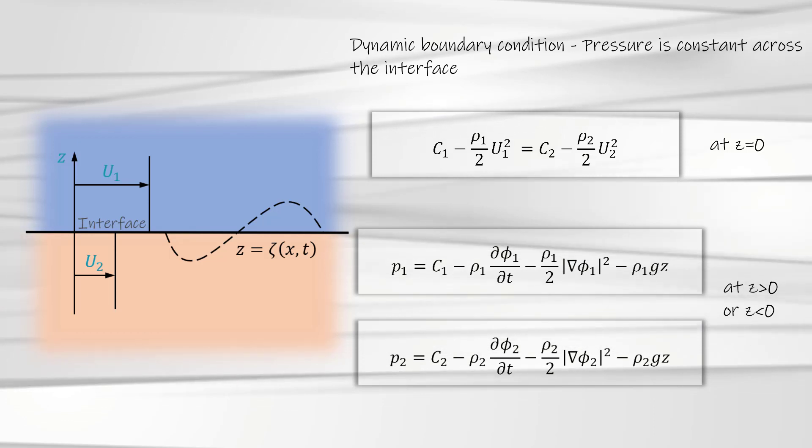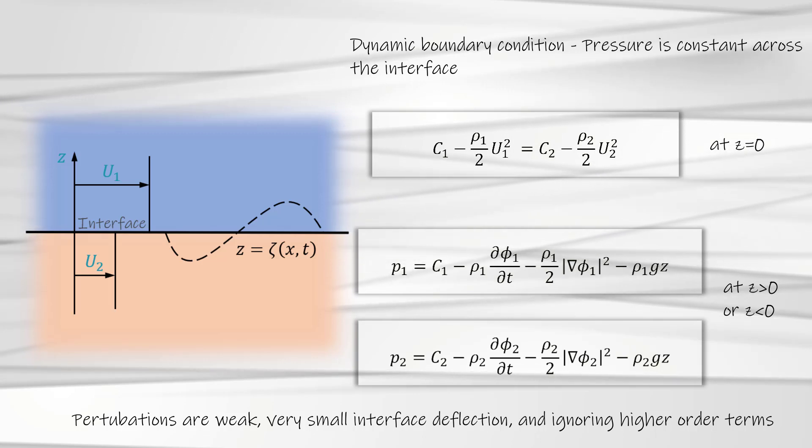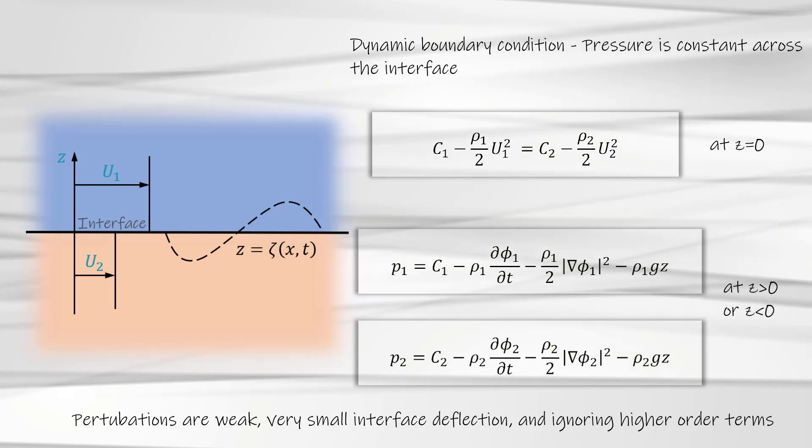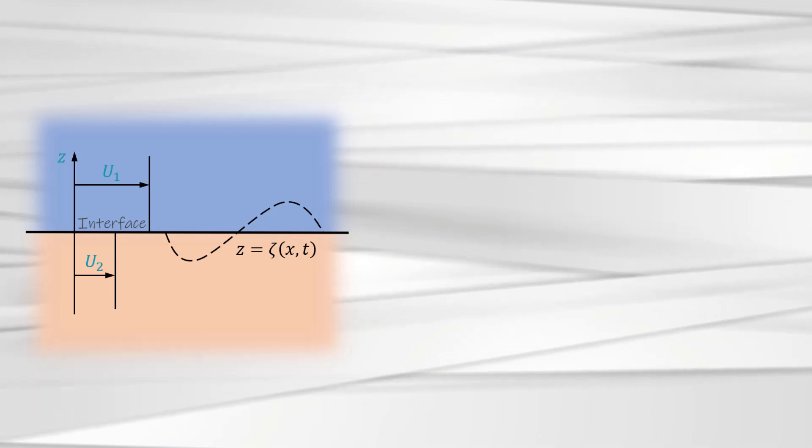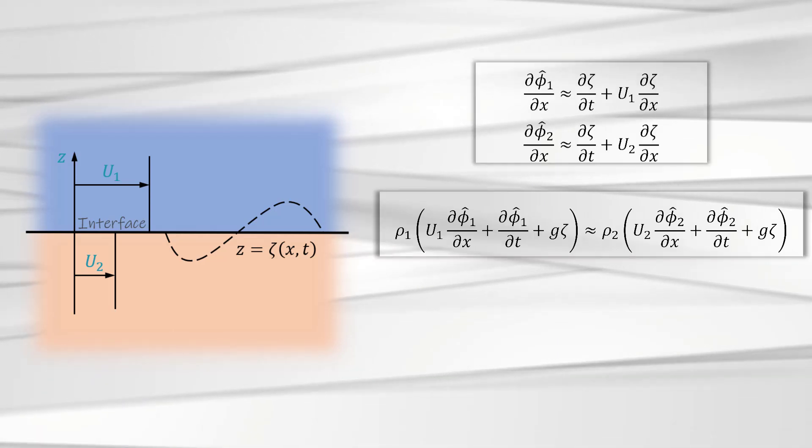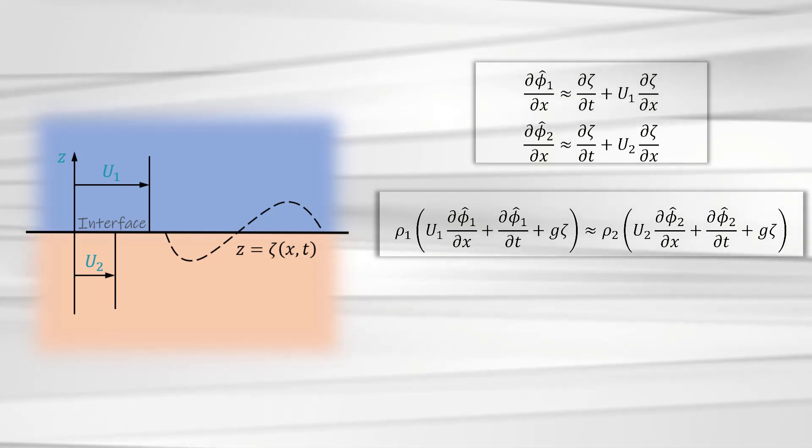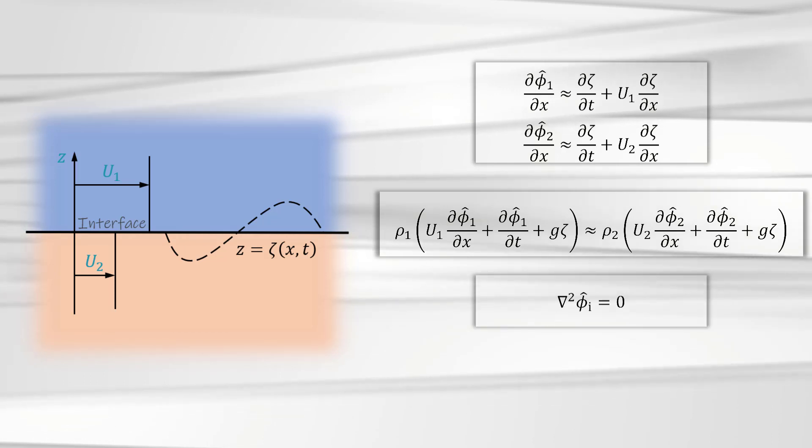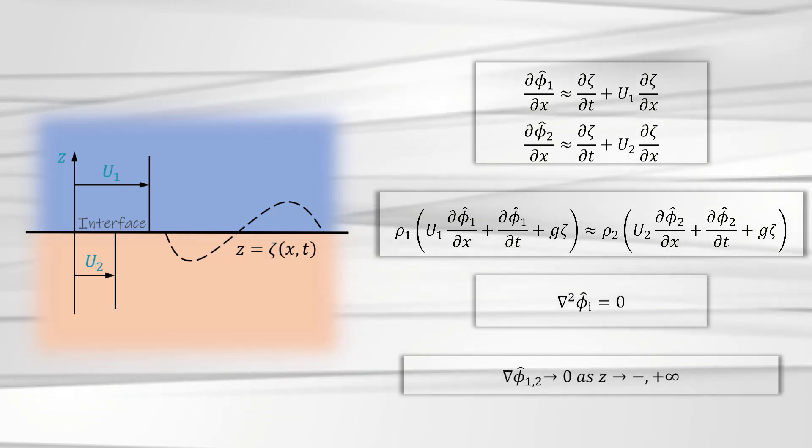If we assume that the perturbations are weak and only result in very small displacements of the interface, and if we can also ignore the higher order terms, the relations we obtain from the kinematic conditions can be recast in the form as shown here. We now have these three equations, the disturbance Laplace equation and the far-field condition that the perturbations need to satisfy.